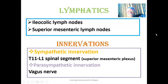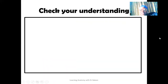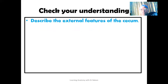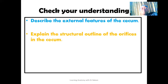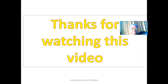For innervation, we have sympathetic and parasympathetic innervation. The sympathetic innervation is via the superior mesenteric plexus, ranging from T-10 to L-1 spinal segment. The parasympathetic innervation is via the vagus nerve. Let's check our understanding through the following questions: describe the external features of the cecum; explain the structural outline of the orifices in the cecum; what is the retrocecal recess; and describe the blood supply of the cecum. Thanks for watching — let's meet again.